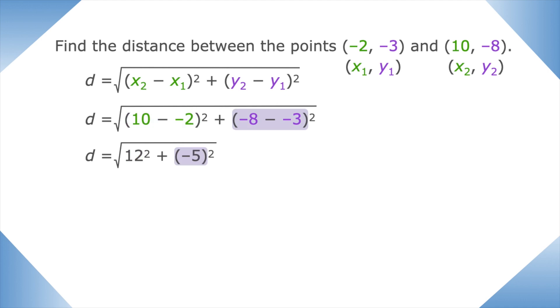Let's simplify those squares. 12 squared is 144, and negative 5 squared is 25. Let's add those two values. 144 plus 25 is 169. And finally, the square root of 169 is 13. Got it! The distance between these points is 13 units. Nice job!